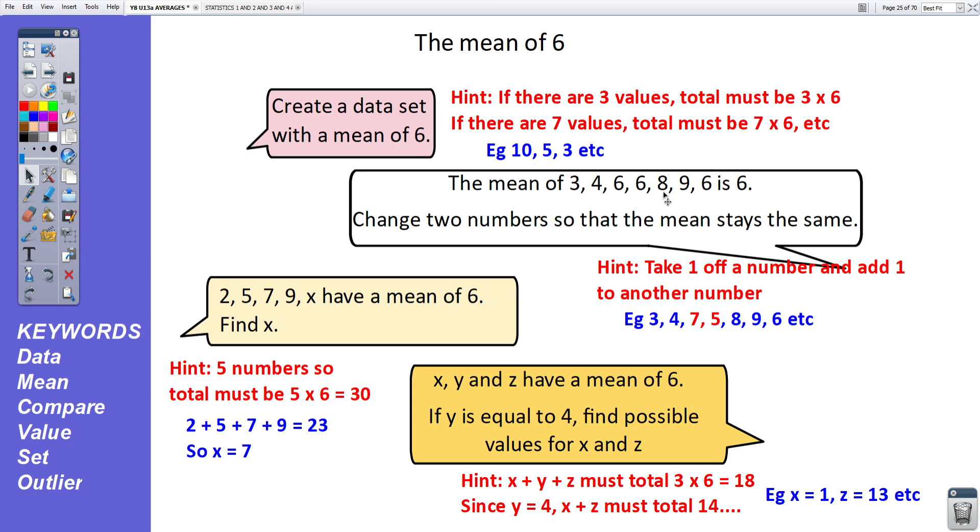The mean of 3, 4, 6, 6, 8, 9, 6 is 6. Change two numbers so the mean stays the same. Well, you could take one off a number and add one to another number. So taking the 6 and the 6, if I made that up to a 7, I'd have to take one off that, making this to a 5. Basically, the total has to stay the same. If the total of these numbers stays the same, the mean will still be 6. I could have taken 3 off here. And added 3 onto here. So long as what I do to one, if I take an amount off one, I add that number onto another, then the mean will stay the same.